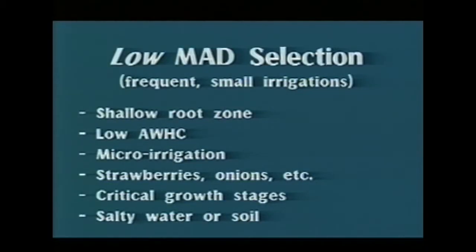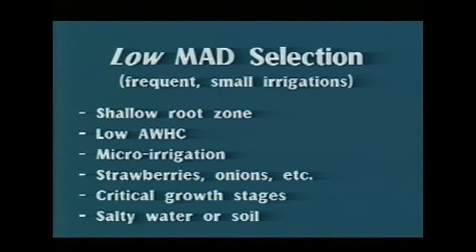Low MAD: why would you irrigate frequently? If you have a shallow root zone, a shallow root zone doesn't hold very much water. Even if it's a soil where most of the water is readily available, like sandy loam, if you only have a foot of soil and you dry it out halfway, you don't have much water left. If you don't irrigate frequently and you really dry it out until it's almost dry, if you're off by one day, you've lost it - you don't have much margin. Anytime you have a shallow root zone with low water holding capacity, if you don't have much in your bank account, you don't want to draw it down too much. That's a cause for selection of small frequent irrigations.